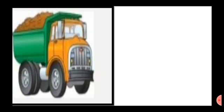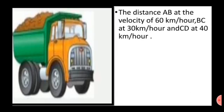In the previous example, we studied about a truck covering distance AB at a velocity of 60 km/h, BC at 30 km/h, and CD at 40 km/h. The velocity for distance CD is greater than for BC because 40 km/h is greater than 30 km/h. From the number of seconds required for this change in velocity to take place, the change in velocity per second can be calculated — this is called acceleration.